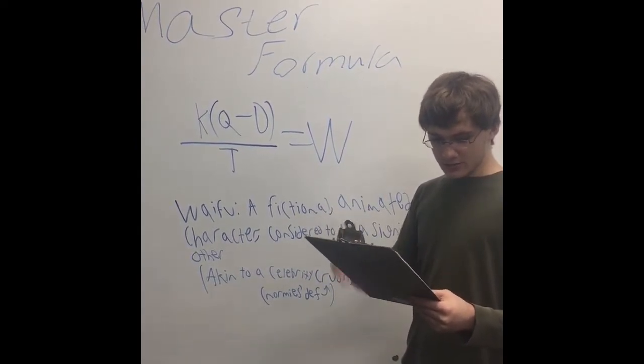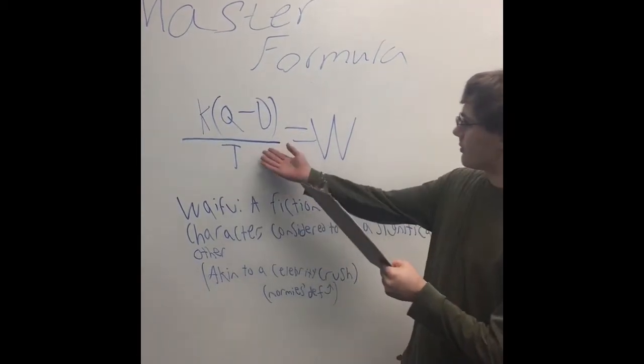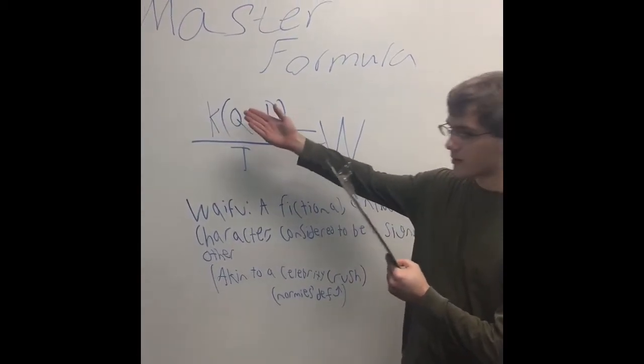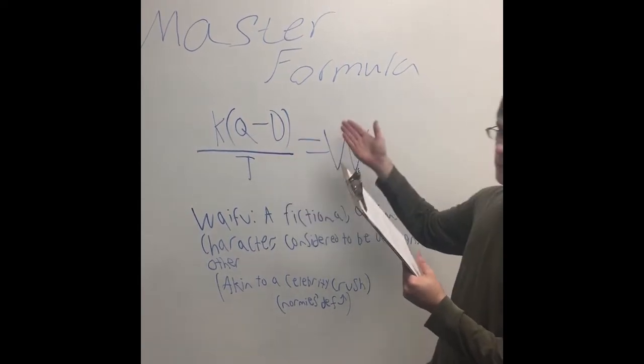Let's start with the kawaii coefficient. Ah yes, one last thing. This will be our master function: k times q minus d over t equals w.